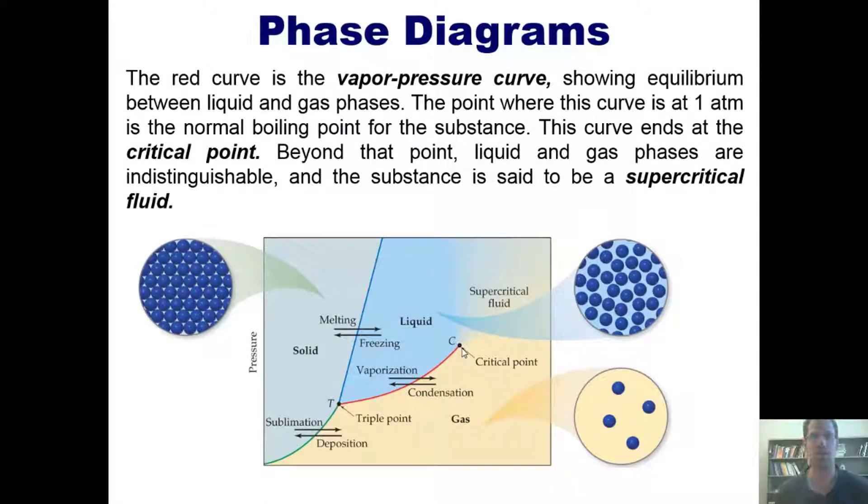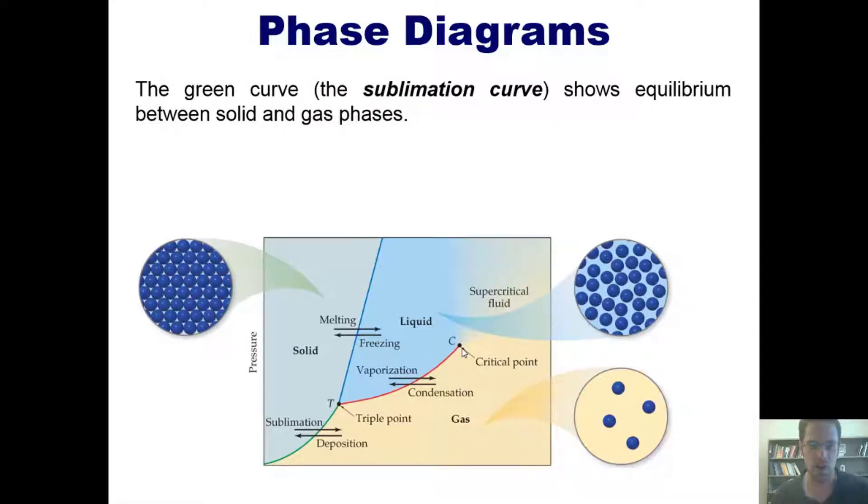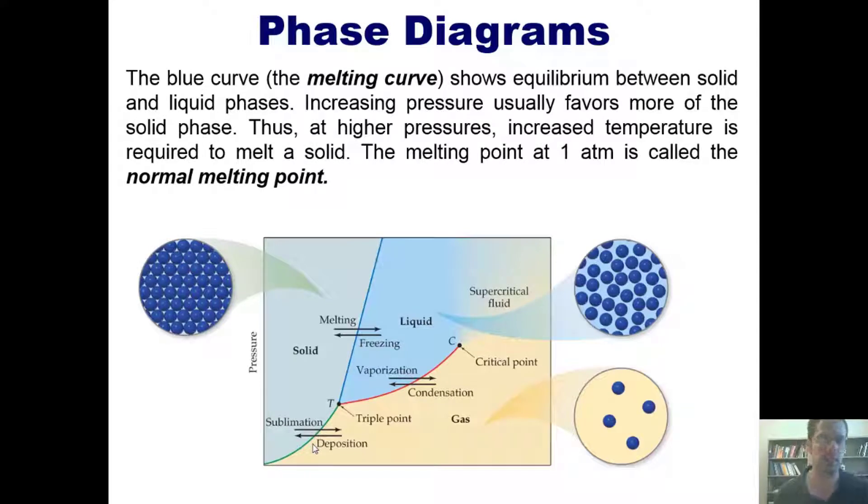The green curve right down here is the sublimation curve that shows the equilibrium between solid and gas phases. The blue curve called the melting curve shows the equilibrium between solid and liquid phases. Increasing pressure usually favors more of the solid phase, thus at high pressures increased temperature is required to melt the solid. The melting point at one atmosphere is called the normal melting point.